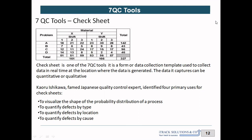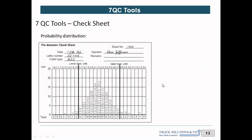First we'll look at the check sheet used to identify the probability distribution of a process. In this check sheet we are measuring the diameter of a machined component — pin diameter. The specification limit for this particular pin diameter is 1.6 mm to 2.7 mm. On one axis you have the diameter requirement and on the other axis you have the number of samples falling in each category.